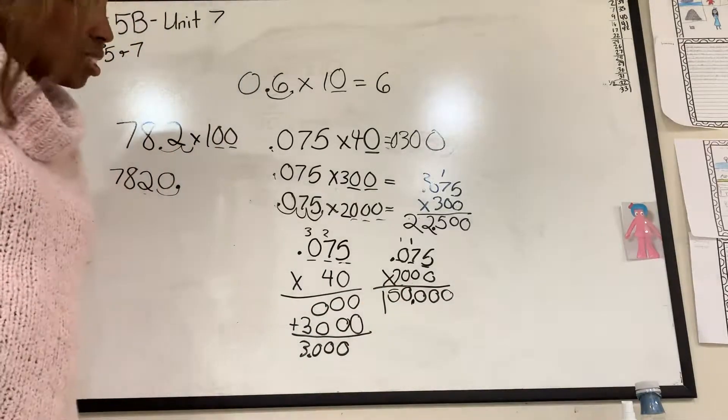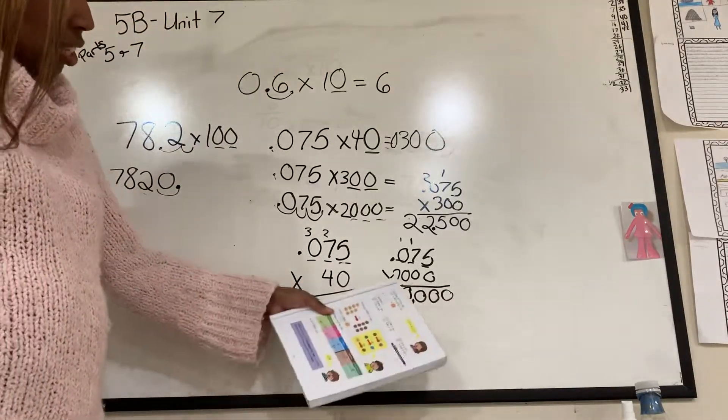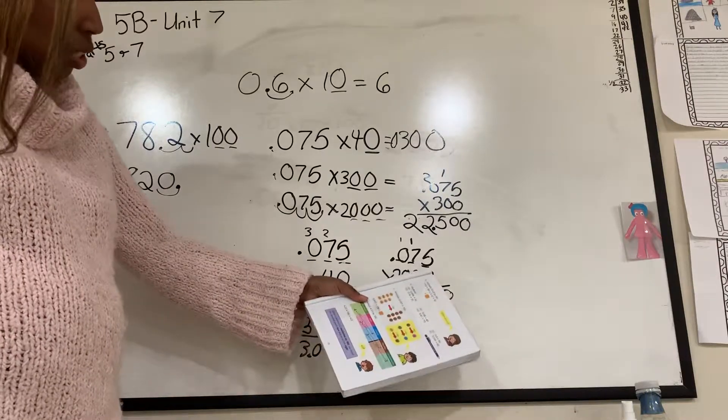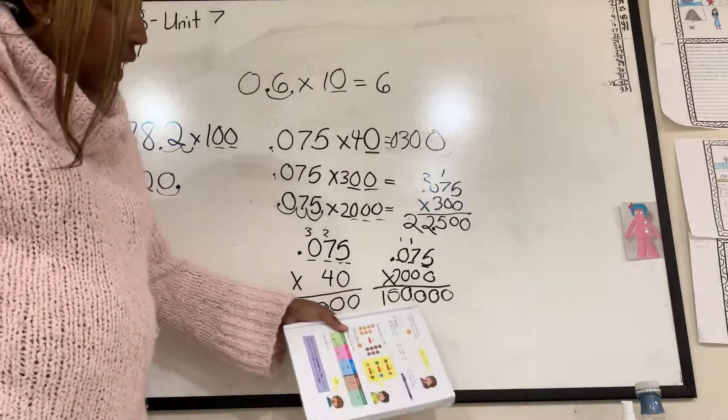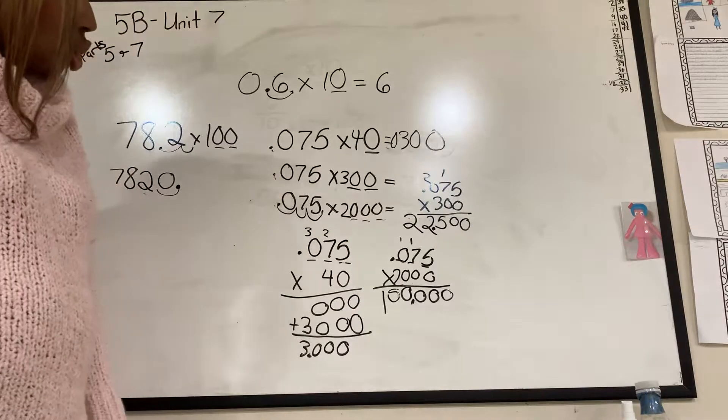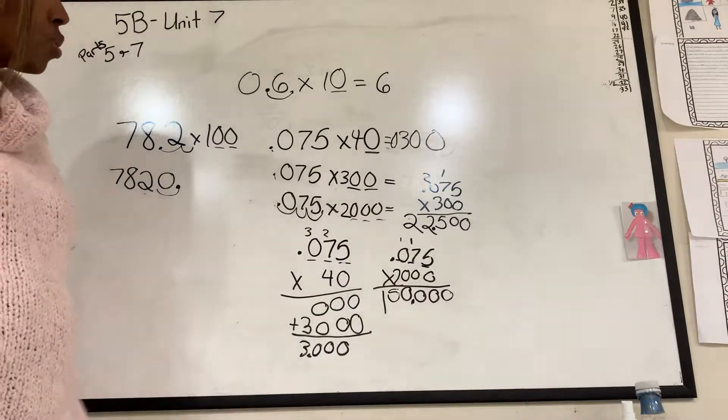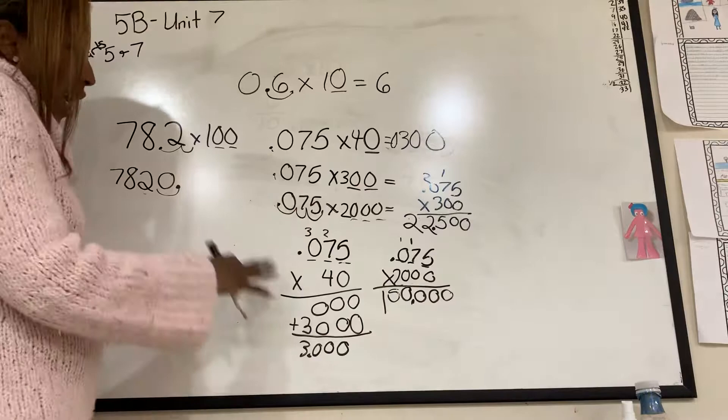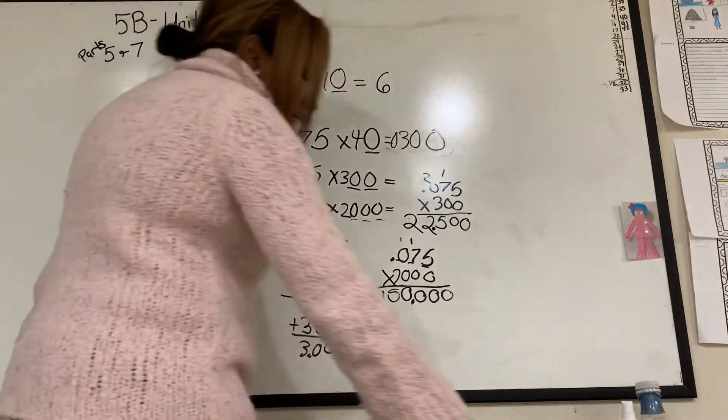So you see how I used the 0s a little differently. I still counted the 0s. I still counted the spots. But I just brought them down and multiplied. So when you do it, make sure you take your time to multiply it out. And checking it makes sense.